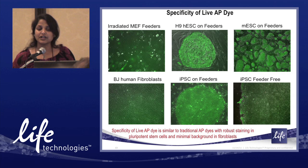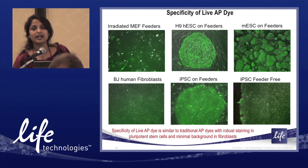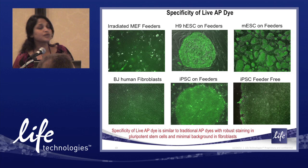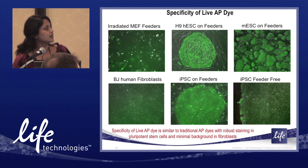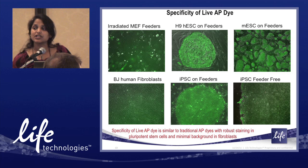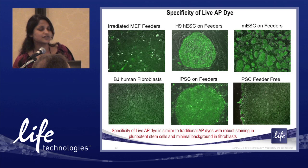To further determine the specificity of the live AP dye, we looked at staining patterns in irradiated MEFs, which are often the feeders for embryonic stem cells, and BJ human fibroblasts, which is our starting material for reprogramming. There is basically no staining in these starting cells, but very specific staining on H9 ESCs, mouse ESCs, and an iPSC colony derived using the CytoTune reprogramming system — both on feeders and in feeder-free systems.